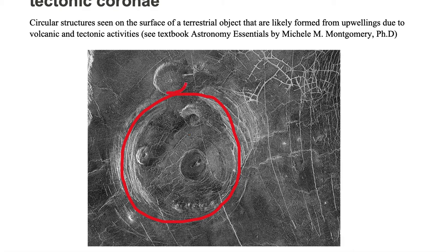For example, we see a pancake dome, which is likely associated with volcanism. We also see this cracked surface up here — that cracked surface is an indication of tectonic activity. So we have two indications of tectonic activity and volcanic activity.